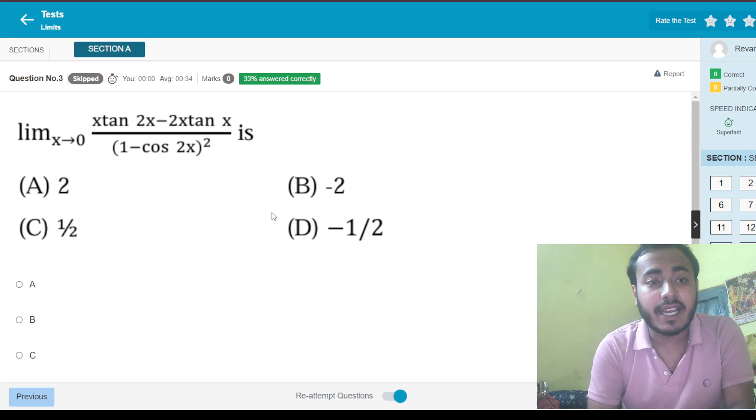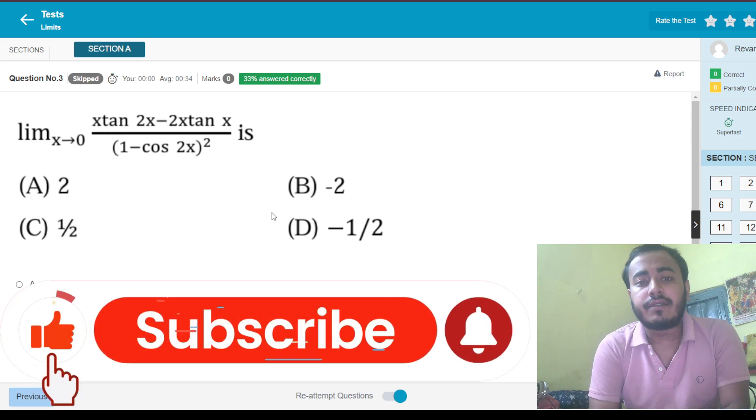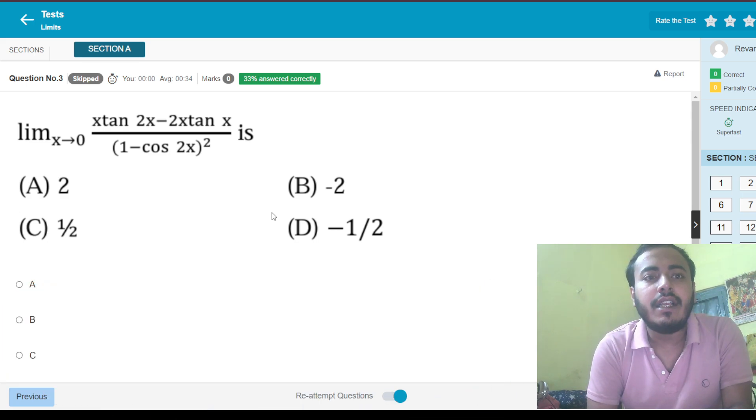Another question: x times tan of 2x minus 2x tan x by 1 minus cos 2x whole squared. This can be done using limits by expansion very easily because the denominator becomes 2 sin squared x, and then whole squared, which means 1 by 4 will simply go out and you're left with sin to the power 4x. This can be adjusted with x to the power 4, which means we can have 1 by 4 times tan 2x minus 2x tan x by x to the power 4, because sin to the power 4x by x to the power 4 as x tends to 0 is 1. This can be done using expansions, tan x's expansion which is x plus x cube by 3 and so on. You will learn inside the calculus mastery course how to do those limits effectively.